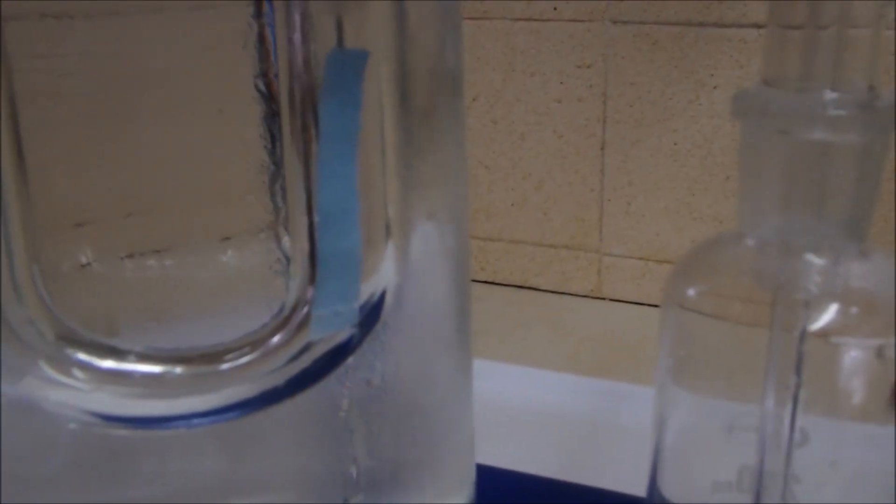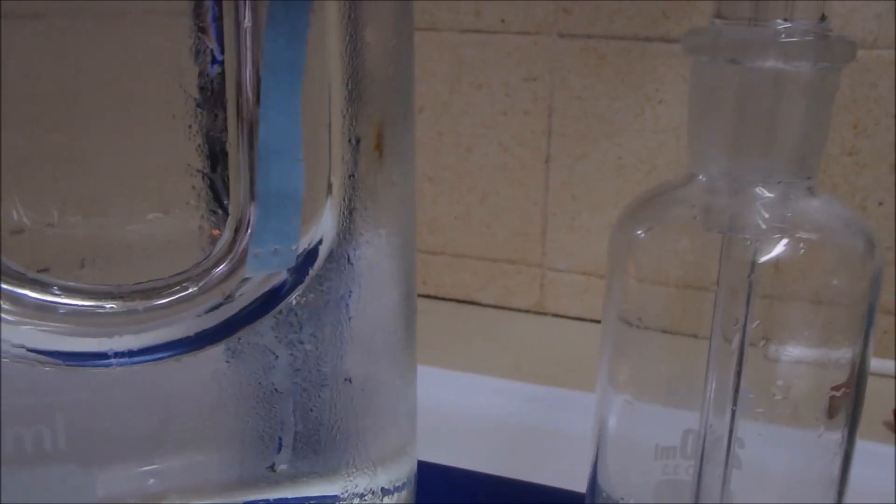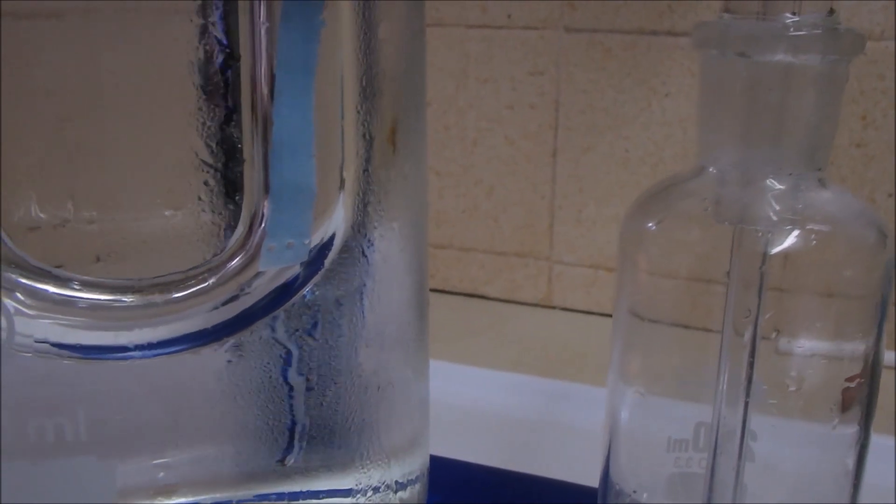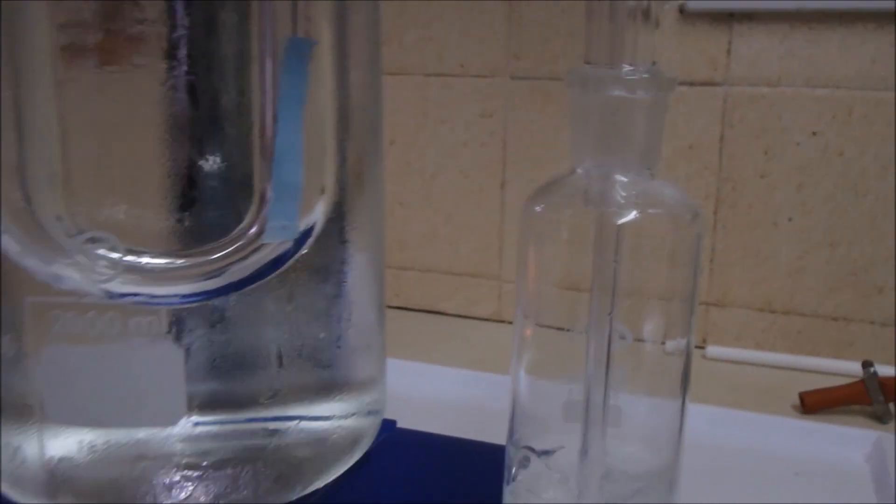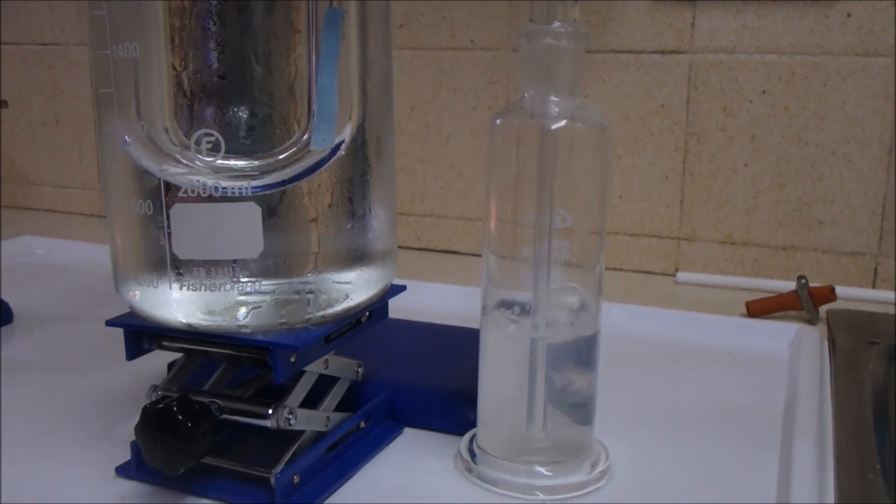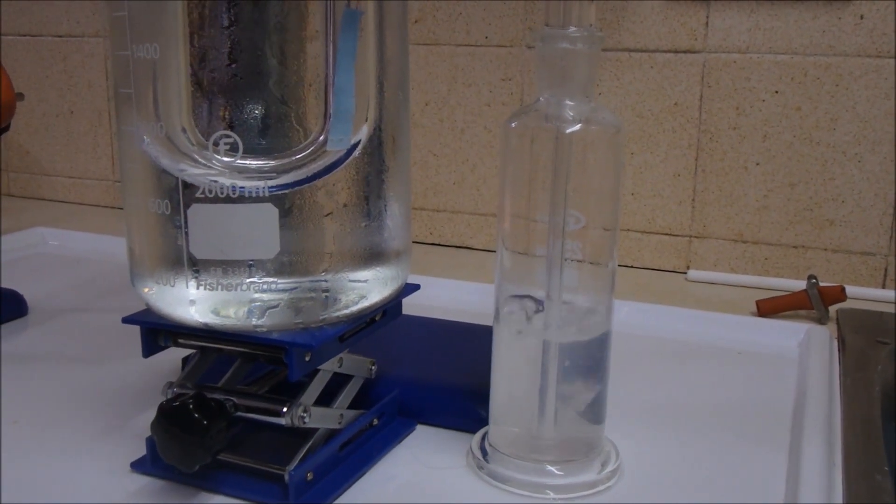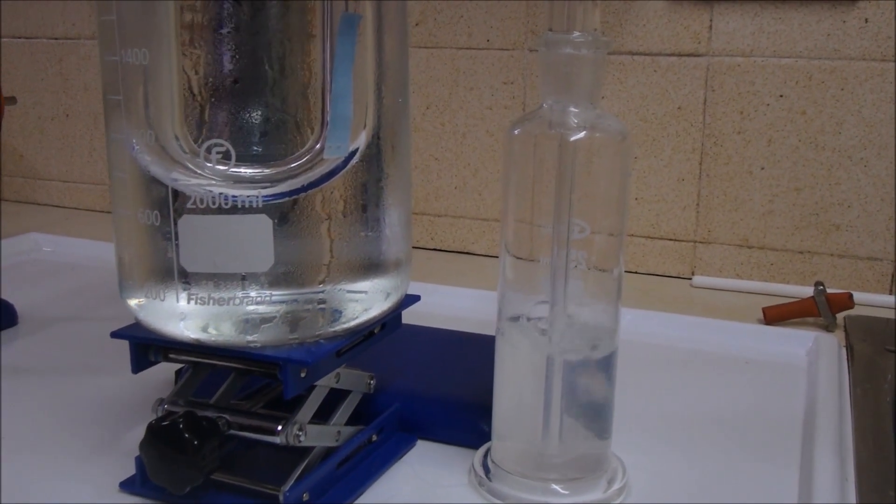So the candle's burning. Now we can look at the cobalt chloride paper. Let's see what that's doing. That's changing colour. And we'll look at the lime water and see what that's doing.